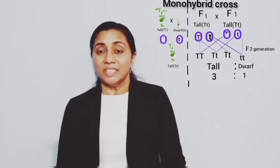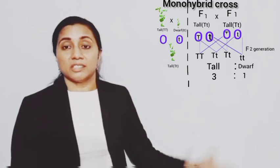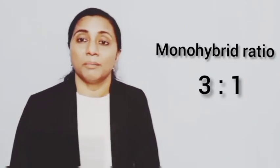Mendel selected parents that differed in a single character — for example, height, where one is tall and the other is dwarf. The crossing of parents that differ in a single character is called a monohybrid cross. In a monohybrid cross, we got the ratio three-to-one in the F2 generation. This ratio is therefore called the monohybrid ratio.